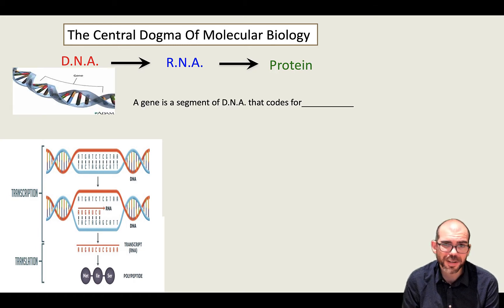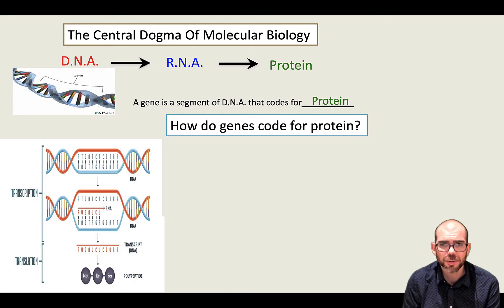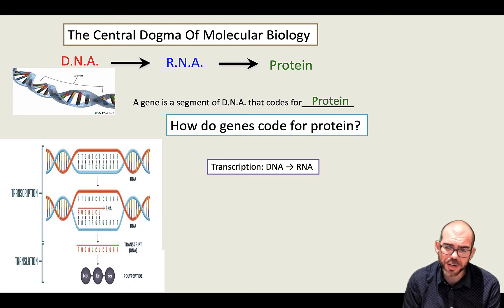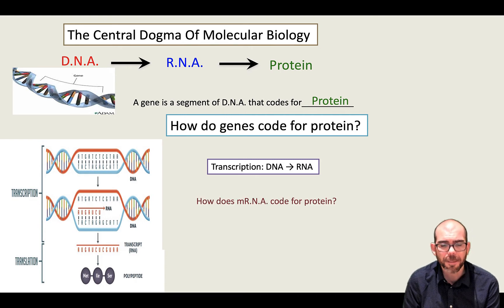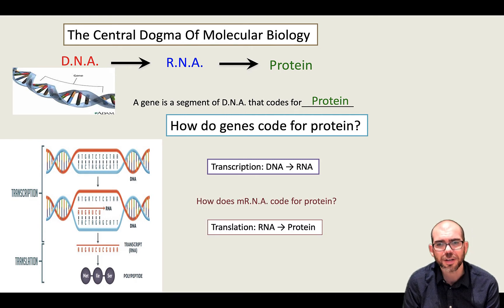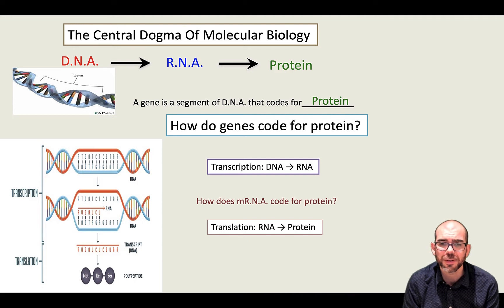A gene is nothing but a segment of DNA that codes for protein. To be able to achieve that, during transcription, DNA is going to be converted into RNA — specifically messenger RNA — and that messenger RNA is going to be translated into a specific protein.